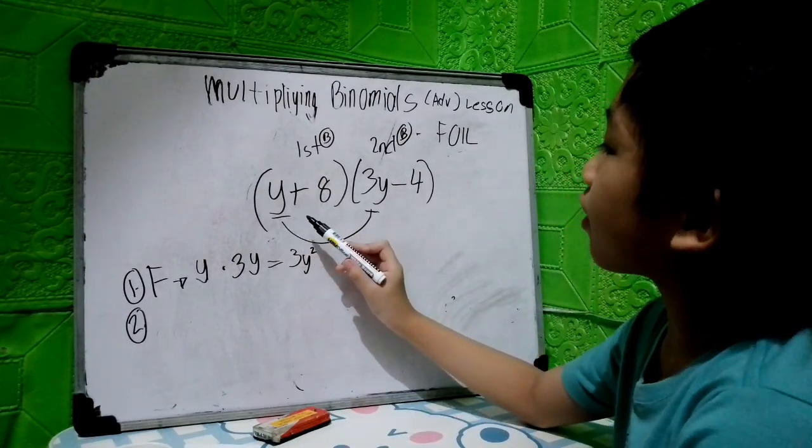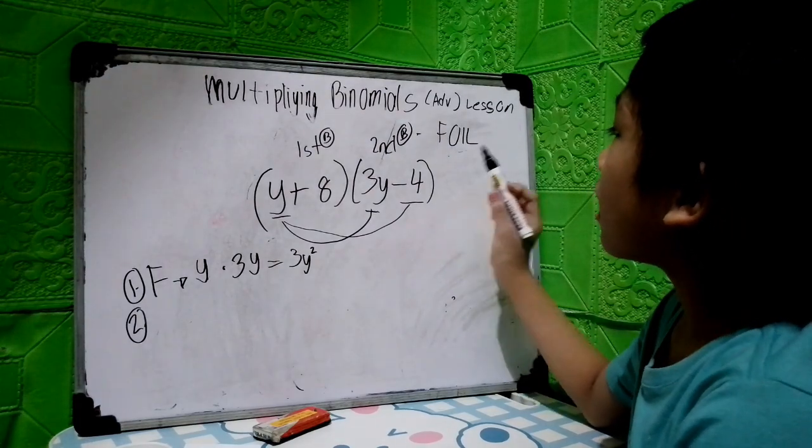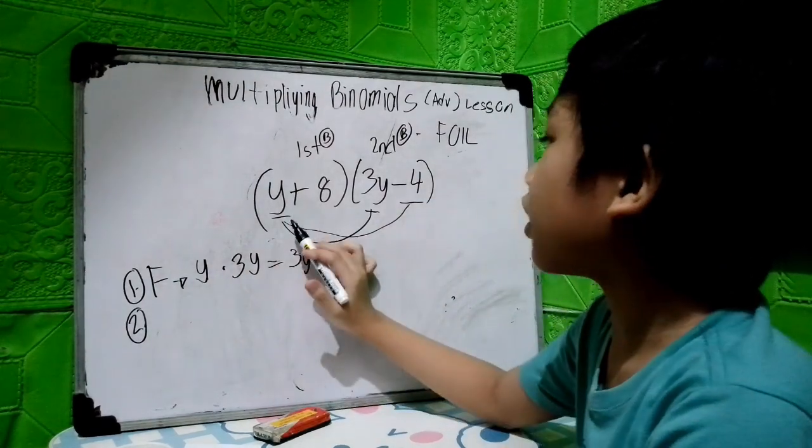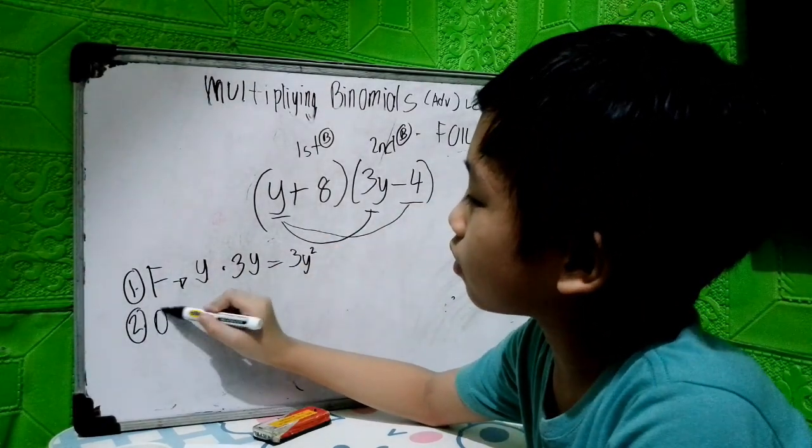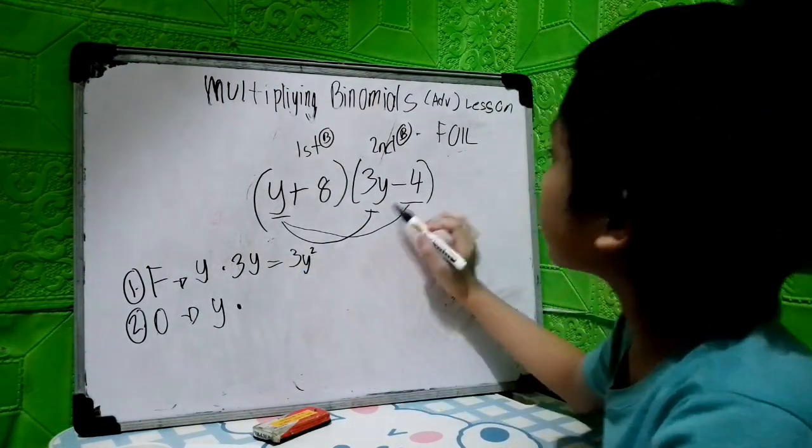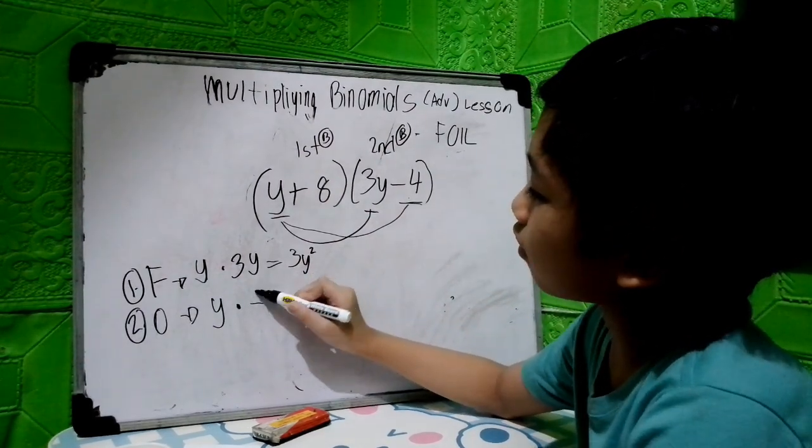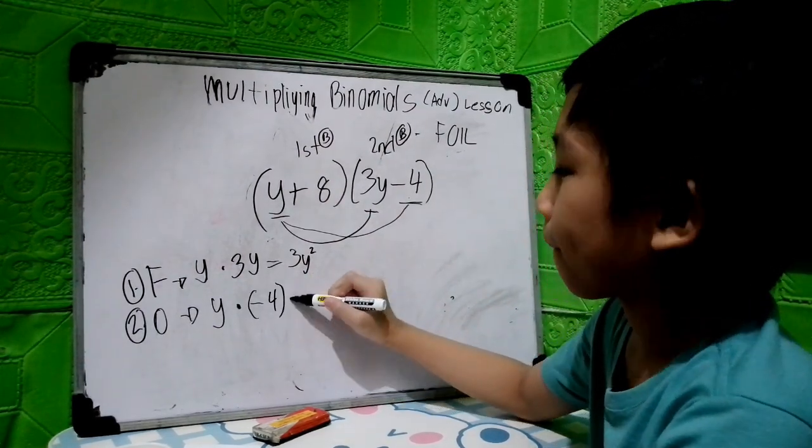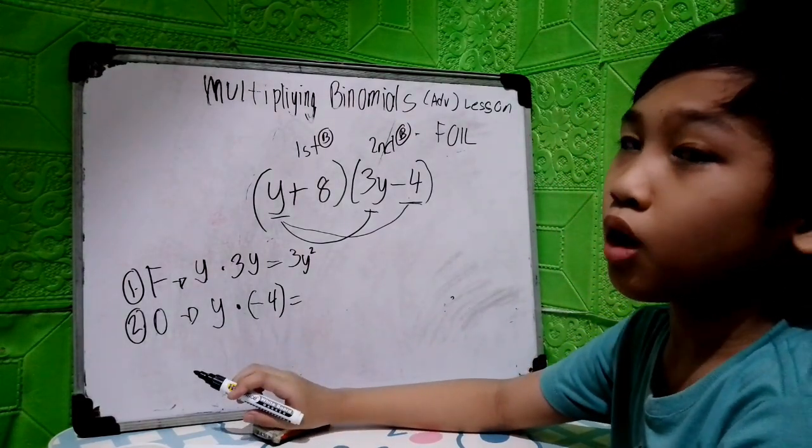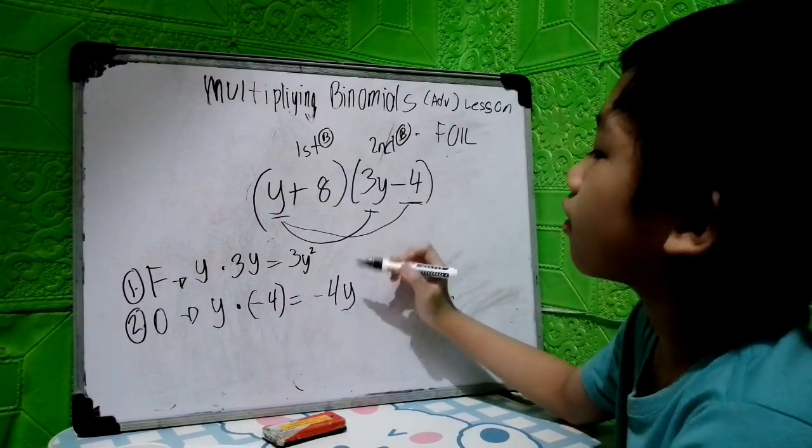The second step: take the first term in the first binomial and multiply it by the second or last in the second binomial. Our first term is y, which is O, and then times the outer term or the last term in the second binomial, which is negative 4. Any number or positive times negative will always be negative. So this will give us negative 4y.